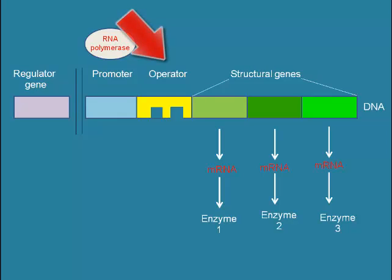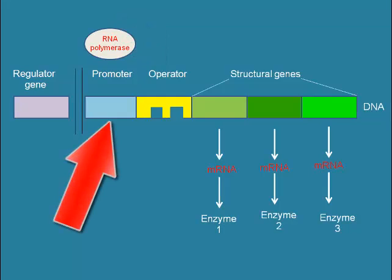The operator is the on-off switch of transcription. It's a short sequence of DNA where the repressor binds, preventing RNA polymerase from attaching to the promoter. The promoter is a short sequence of DNA where RNA polymerase first attaches when the genes are to be transcribed.